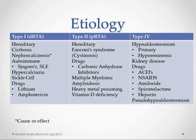Type 4 is a problem with aldosterone, so this is usually going to be an adrenal issue like primary hypoaldosteronism. Or it could be a hyporeninemic cause, where we're not making enough renin to stimulate aldosterone production — which could be a problem with kidney disease or drugs like ACE inhibitors, NSAIDs, amiloride, spironolactone, and heparin. Spironolactone is easy to figure out because that's a direct aldosterone inhibitor. There's also pseudo-hypoaldosteronism.